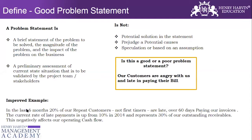Here is an improved problem statement: 'In the last six months, 20% of our repeat customers — not first-time customers — are late over 60 days paying our invoices. The current rate of late payment is up from 10% in 2014 and represents 30% of our outstanding receivables. This negatively affects our operating cash.' In this improved statement, there is a presence of four W and one H, all the key ingredients, and no potential solution or potential causes.